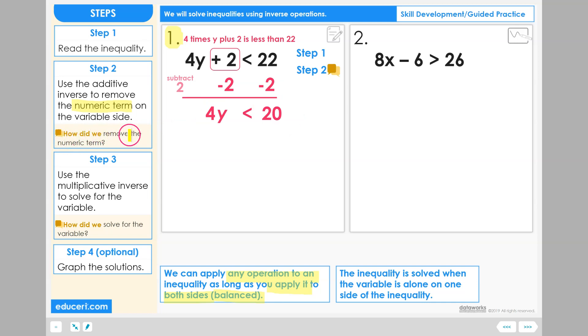How did we remove the numeric term, plus 2? To remove the numeric term, we used the additive inverse of subtracting 2, and we applied this operation to both sides of the inequality.